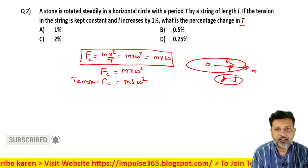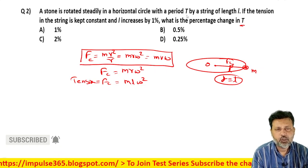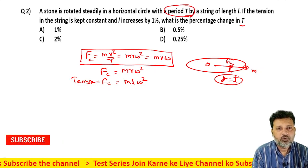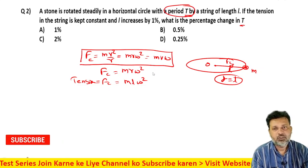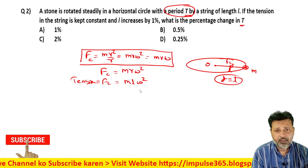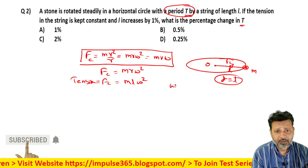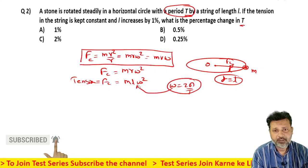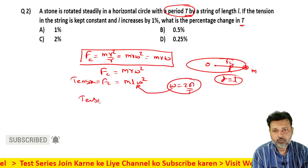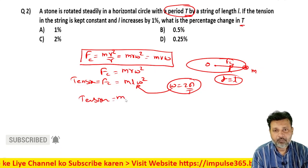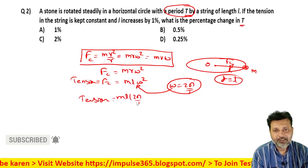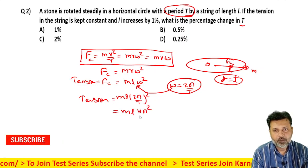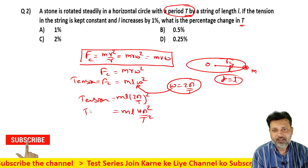Tension is generally denoted by T, but time period is also denoted by T in the question, so we won't denote tension by T. Omega is 2π by T. Substituting this value, tension equals m L into (2π by T) whole square, which equals m L 4π² by T².